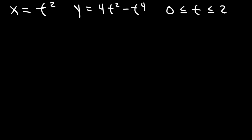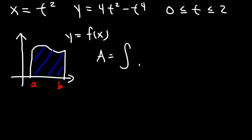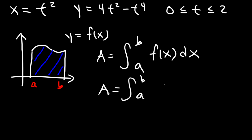What formula should we use? If we have some function where y is equal to f of x, and we wish to find the area under the curve from a to b, the area under this curve will be the integral from a to b of f of x dx. We can see that y is f of x, so the definite integral from a to b of y dx will give us the same area.